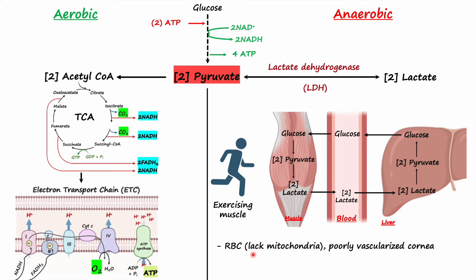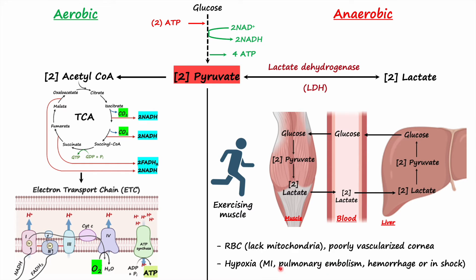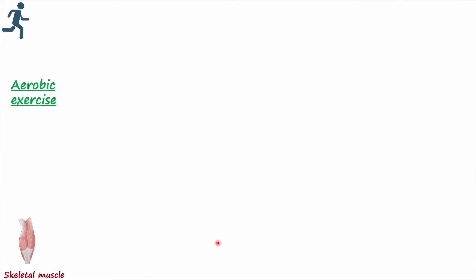Anaerobic glycolysis also occurs in red blood cells, which lack mitochondria. This is important because pyruvate oxidation to acetyl-CoA, the TCA cycle, and the electron transport chain all take place in mitochondria. Since red blood cells lack mitochondria, they rely entirely on glycolysis to generate ATP. Anaerobic glycolysis can also occur in poorly vascularized tissue like the cornea, and during hypoxia — for instance during myocardial infarction, pulmonary embolism, hemorrhage, and shock.